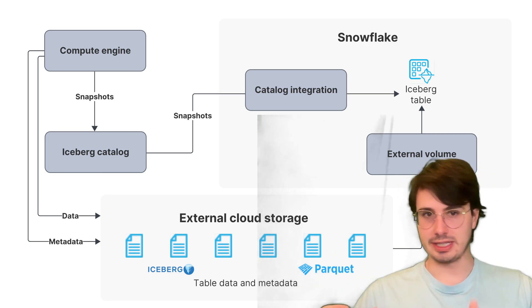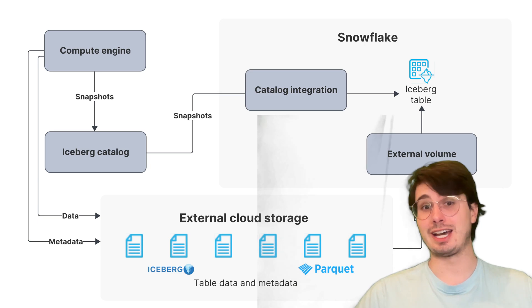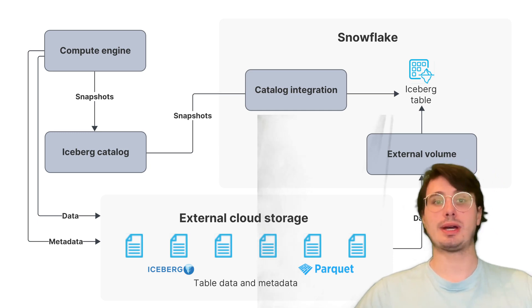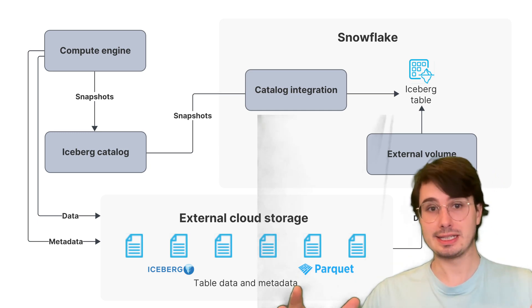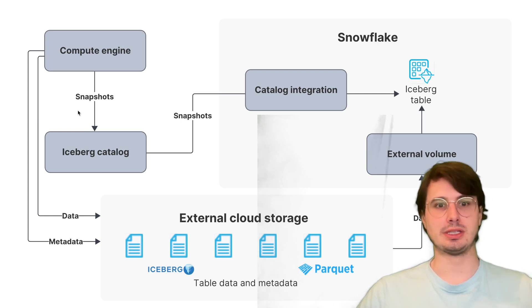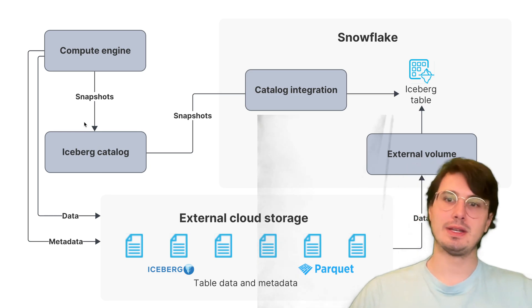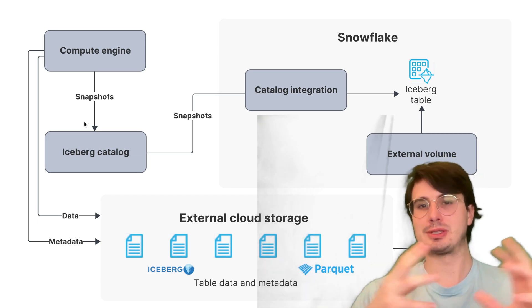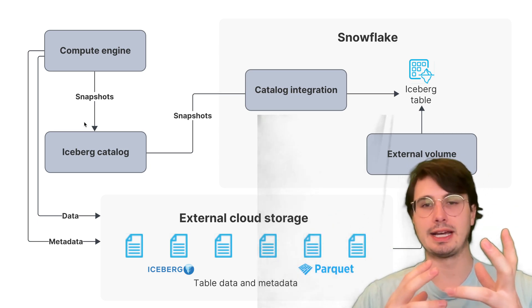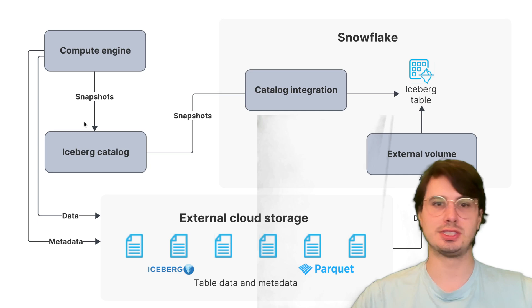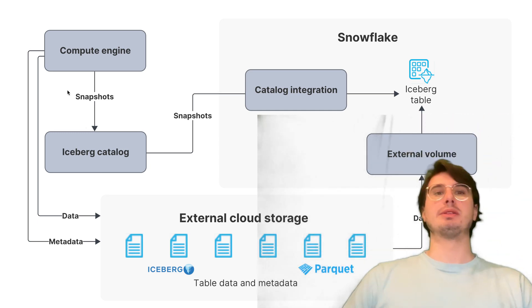You can use Flink, Spark, or Iceberg's built-in actions like rewrite data files to help automate the compaction process. You should also enable write isolation. Iceberg's snapshot-based architecture allows concurrent writers via optimistic concurrency. You can use lock managers or branching strategies — different ways of handling which write gets propagated first when two writers are writing at the same time — to avoid conflicts in those types of environments.